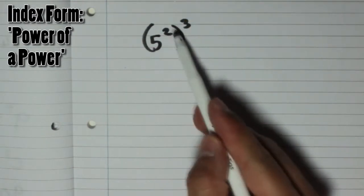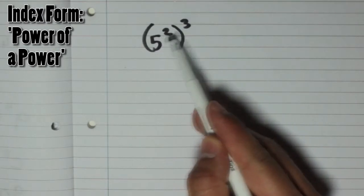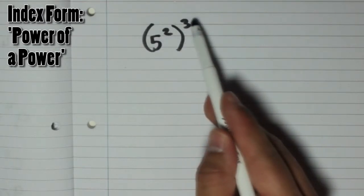Now what that means is 5 squared times 5 squared times 5 squared, because it's being cubed.